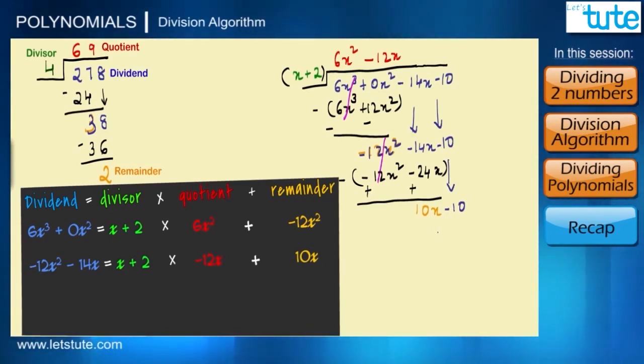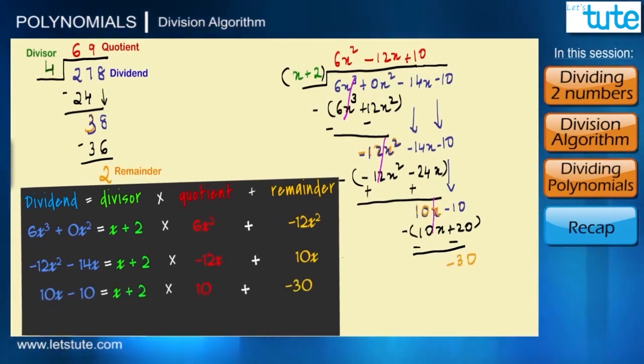So we will continue with our division. 10x - 10 now will become the dividend. Then x into 10 will give us 10x and 2 × 10 will give us 20. On subtracting, the signs will change. Here positive and negative signs get cancelled and we are left with -30. So -30 is our remainder.